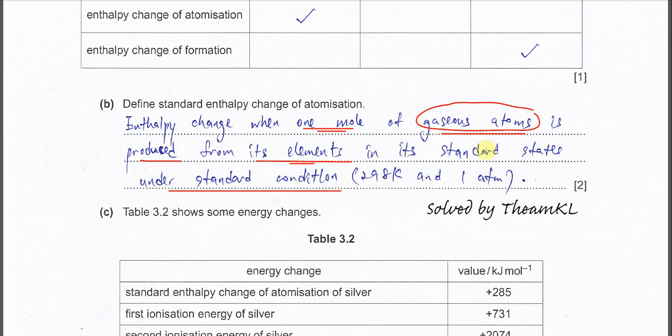Standard state means, for example, sodium must be solid, oxygen must be gas and so on. Standard state. And it's happened under standard condition, which is 298 Kelvin, 100 kPa or 101 kilopascal.